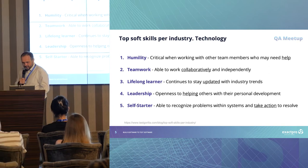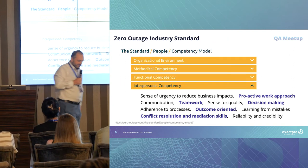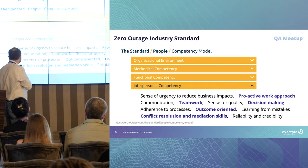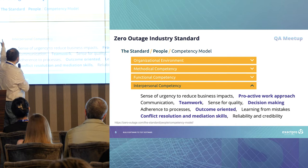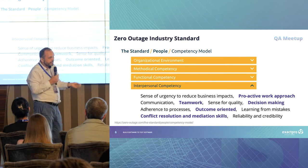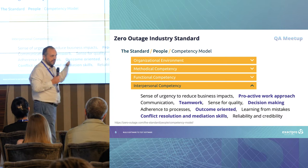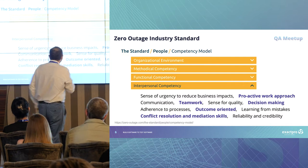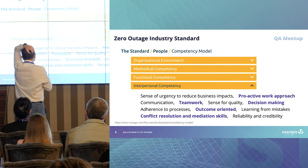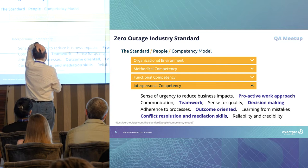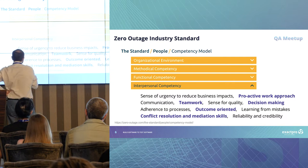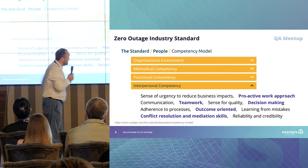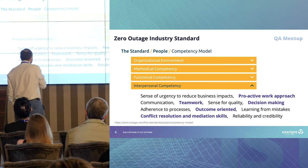There is a standard for IT service management, and if you go to that page, the standard has a separate part for people. It covers processes, organization, and context, but it also has a separate section about a competence model. That section has four subsections, and the last one is about non-technical competence. Let's read the list: sense of urgency to reduce business impact, and — again — proactive. You are the starter, proactive work approach, communication, sense of quality.